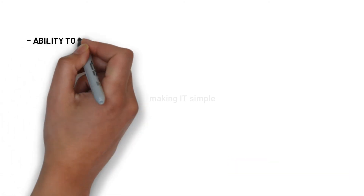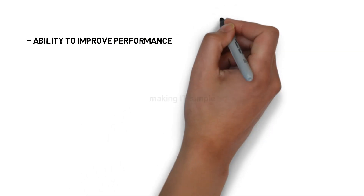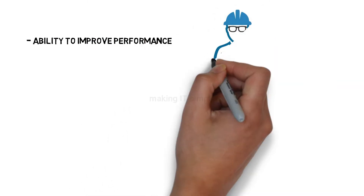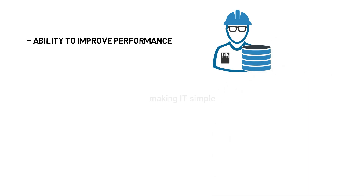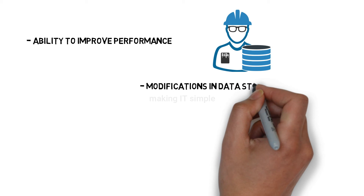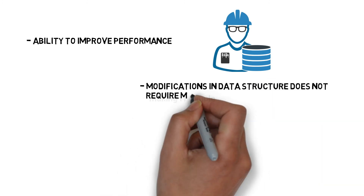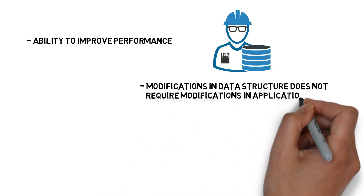Let us see a few advantages of data independence. The first is the ability to improve performance — since we can modify the physical or logical level without any complications, we improve the performance. The second advantage is that modifications in data structure do not require modifications in the application program.